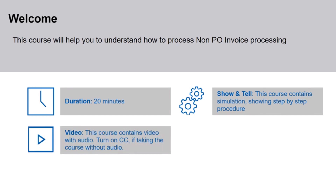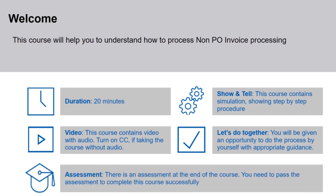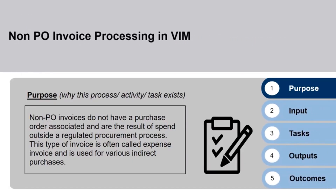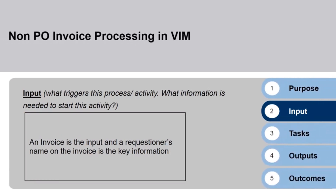Turn on the closed captions if you are taking the course without the audio. Once you go through the step-by-step procedure, you will be given an opportunity to do the process by yourself with appropriate guidance. There is an assessment at the end of the course. You need to pass the assessment to complete the course successfully. Non-PO invoices do not have a purchase order associated and are the result of spend outside a regulated procurement process. This type of invoice is often called an expense invoice and is used for various indirect purchases. An invoice is the input and a requisitioner's name on the invoice is the key information.